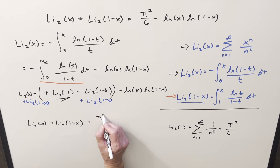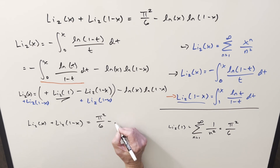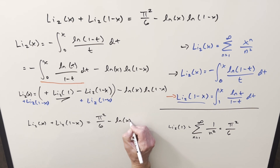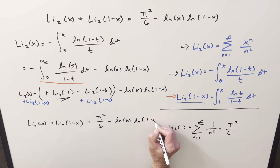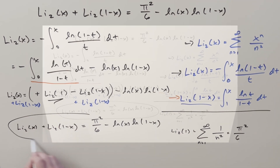And so what we have is π²/6 minus ln(x) · ln(1 − x). And that's it — that's the reflection formula for the dilogarithm.